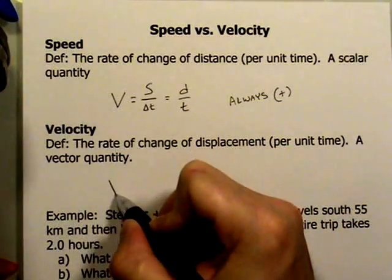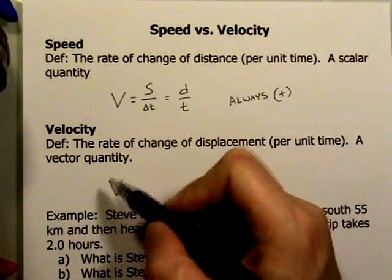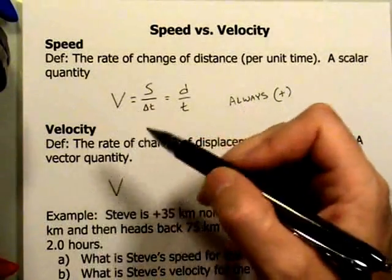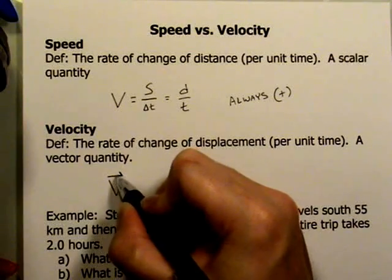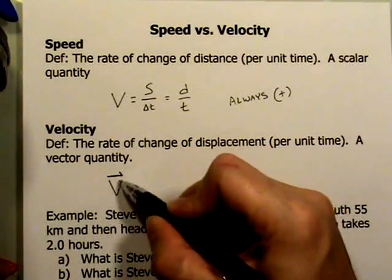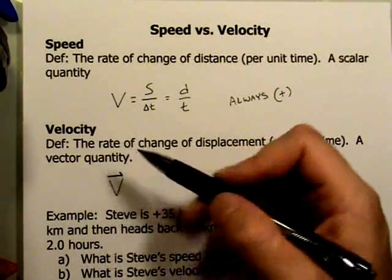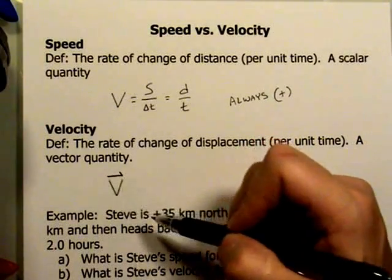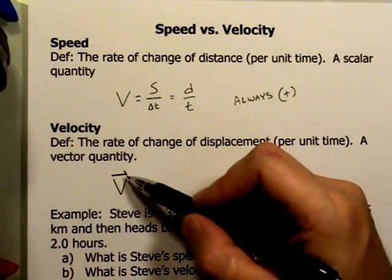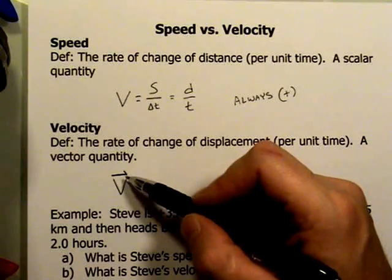Now in order to separate this V from that V, we use what is commonly known as the vector hat notation. You can actually draw just a regular arrow. So you can draw both sides of the arrowhead. But generally speaking, you'll see in most books that they draw, it's sort of like a half arrow. And that symbol above means that this is the vector version of it.